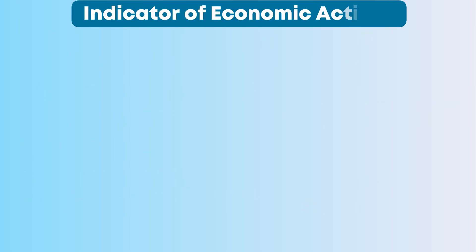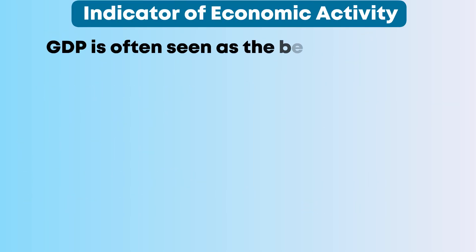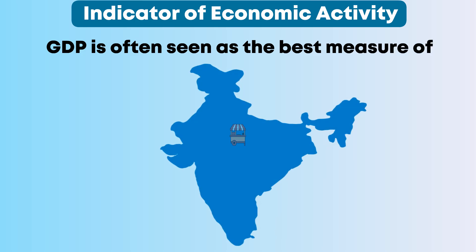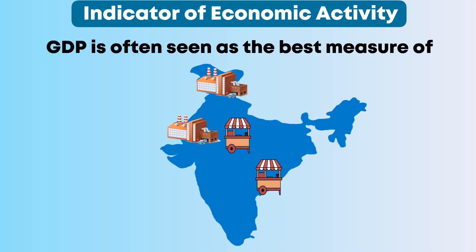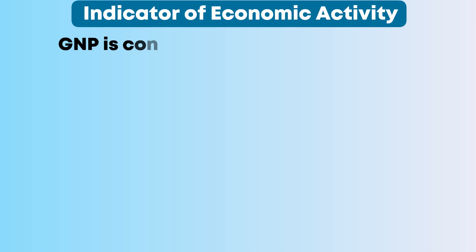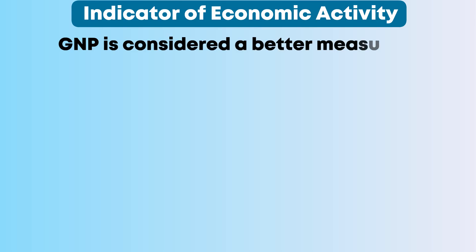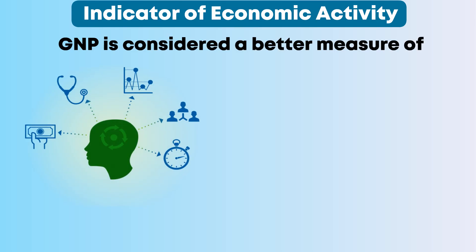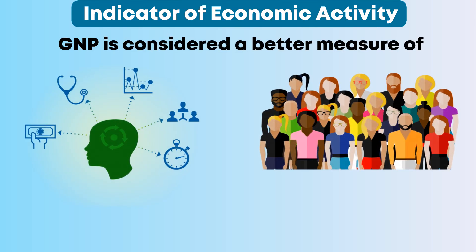Indicator of economic activity: GDP is often seen as the best measure of the overall economic activity happening within a country. GNP is considered a better measure of the economic well-being of a nation's residents.